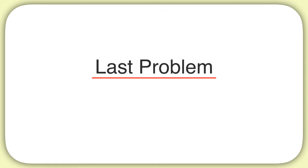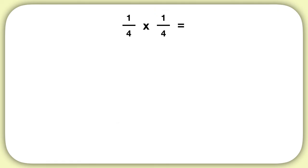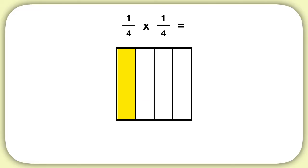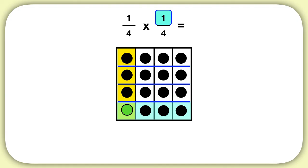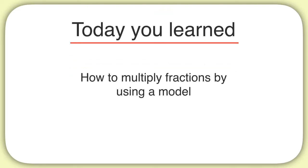Now here's your last problem for this video. What is one-fourth times one-fourth? Start by drawing a model of one-fourth. Then to multiply it by one-fourth, we'll break it into four equal sections. Because we're only multiplying by one-fourth, we'll only shade in one of those sections. Then we can see that one piece has been shaded twice, and that's out of a total of sixteen pieces in this model. So one-fourth times one-fourth is one-sixteenth. Today you learned how to multiply fractions by using a model.